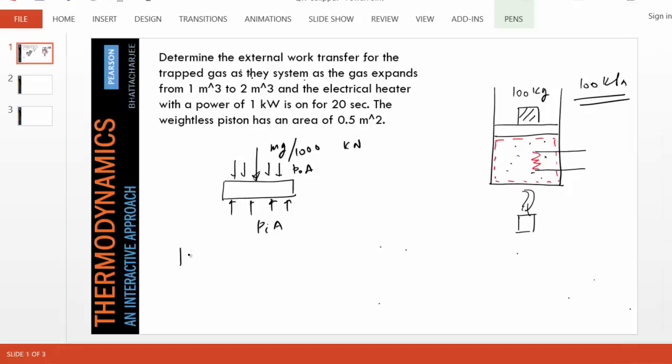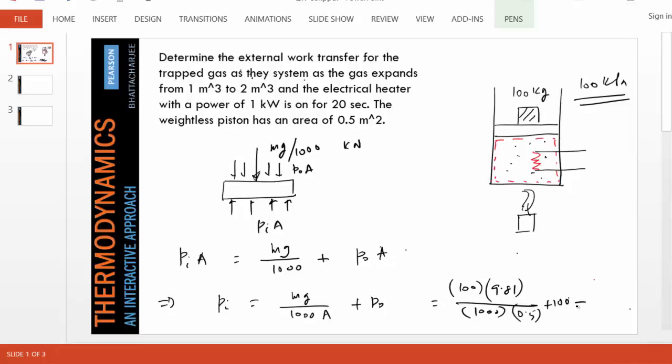A force balance in the vertical direction will produce PA is that upward force must be equals mg over 1000 plus P0 times A. Solving this we get P to be mg over 1000A plus P0, which turns out to be 100 kg times 9.81 over 1000, the area is 0.5, plus 100, which is equal to about 102 kPa.